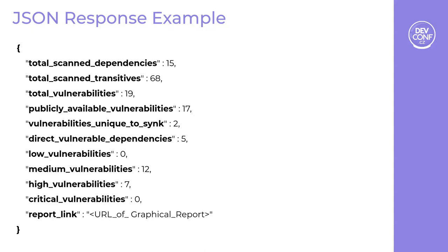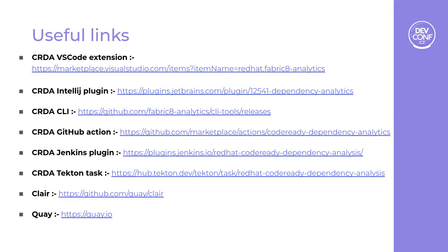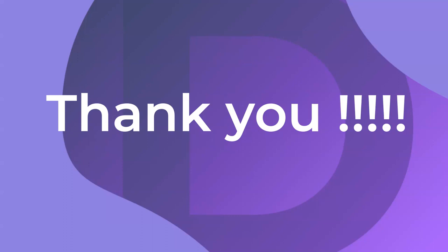Due to time constraints, we couldn't cover all extensions, but links to all plugins and extensions are available and you can download or install them and give them a try. This is how you can achieve DevSecOps capabilities in your projects using a single platform — Code Ready Dependency Analytics by Red Hat. Thank you, and please let me know if there are any questions.